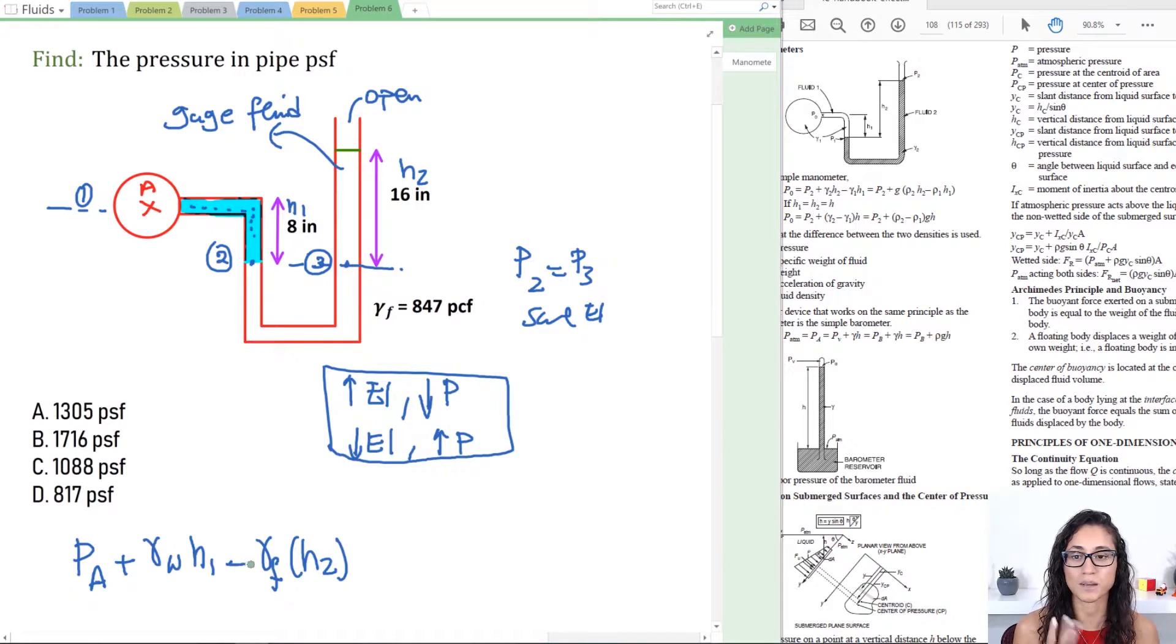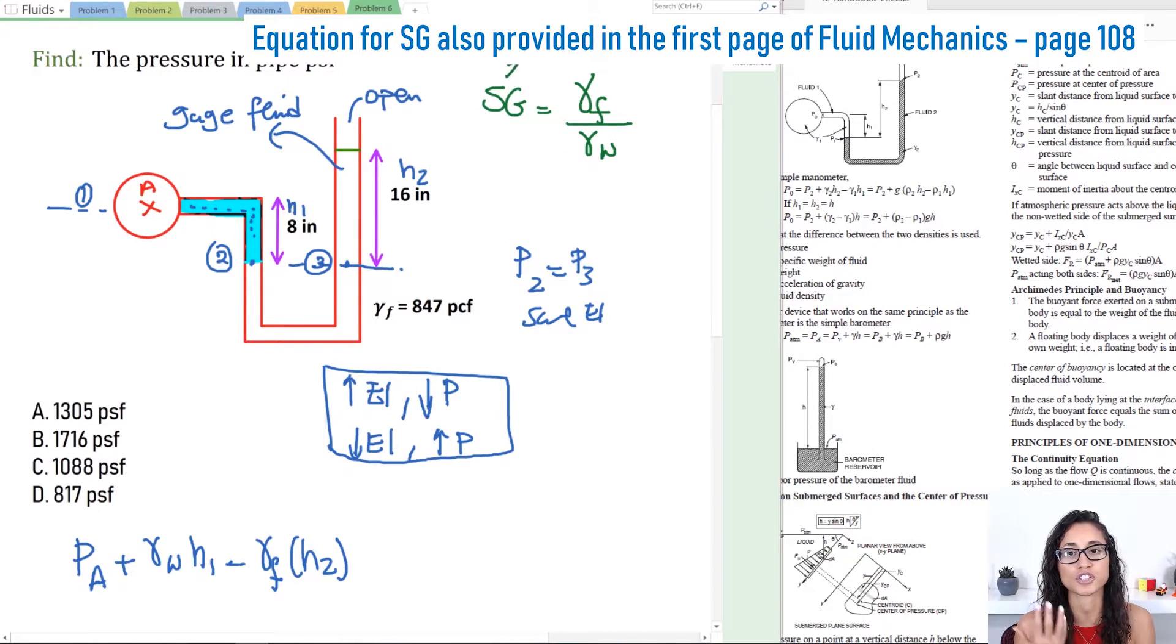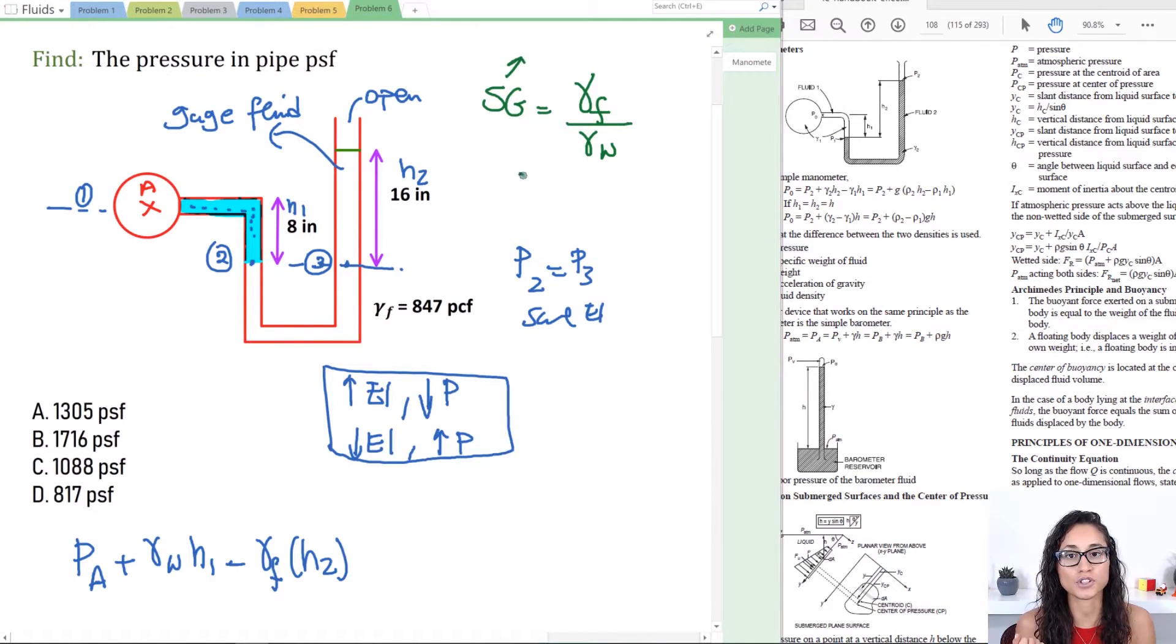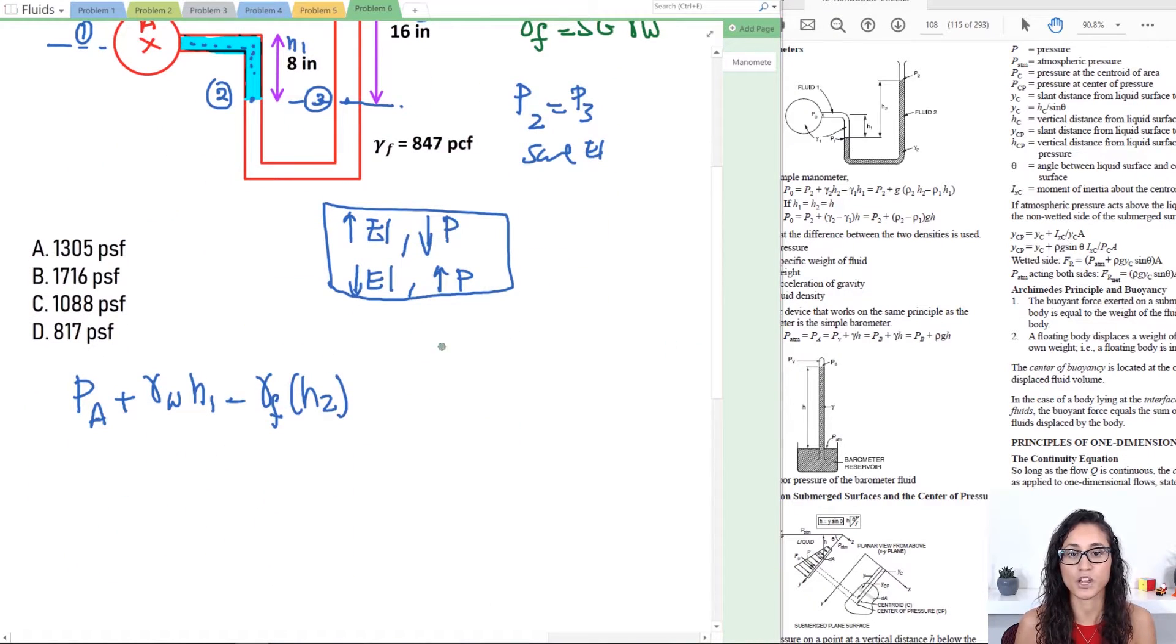Now another thing I would like to point out is sometimes in fluid mechanics books you will see that they give you the specific gravity instead of the unit weight of the fluid. In that case, what you do is really simple. Remember guys, the specific gravity is equal to the unit weight of the fluid divided by the unit weight of the water. If you forget this in the test, you can always check under the geotechnical engineering. They have the equation there, so you don't have to worry about remembering it. The unit weight of the fluid is just equal to the specific gravity times the unit weight of the water.